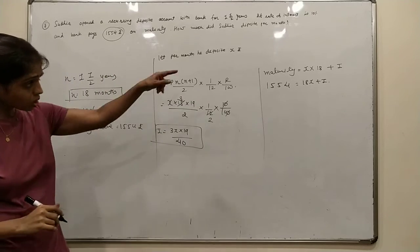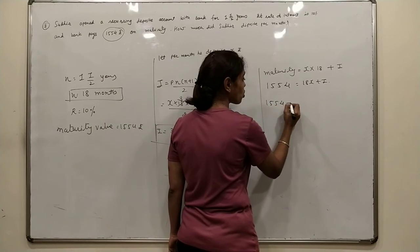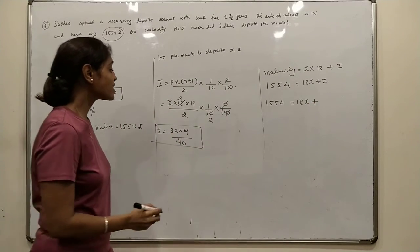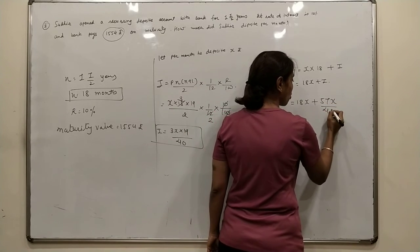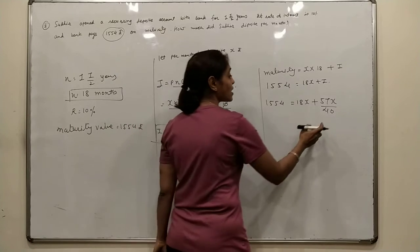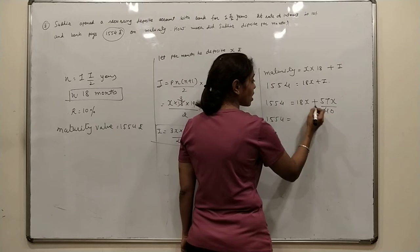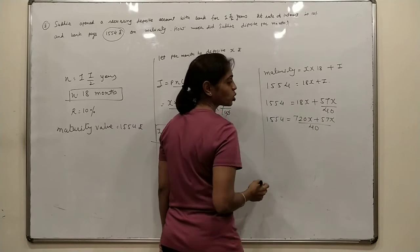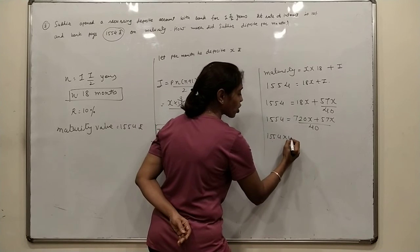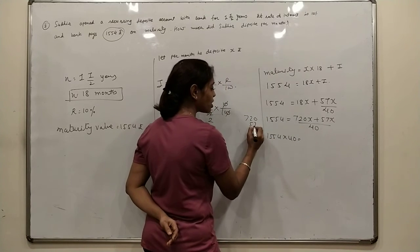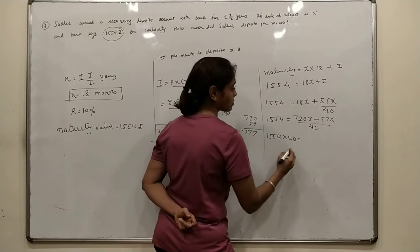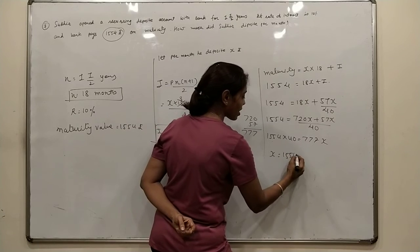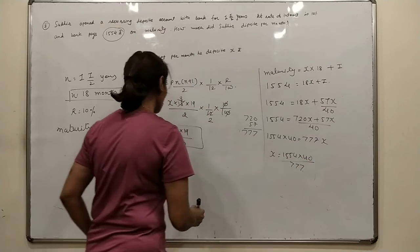40 is the interest. Maturity value is 1554 equals 18x plus interest, which is 57x upon 40. Taking LCM: 1554 equals (720x plus 57x) upon 40. So 1554 times 40 equals 777x. Therefore x equals 1554 times 40 divided by 777, which is 80. x equals 80 rupees.